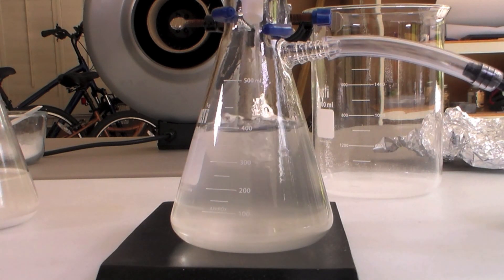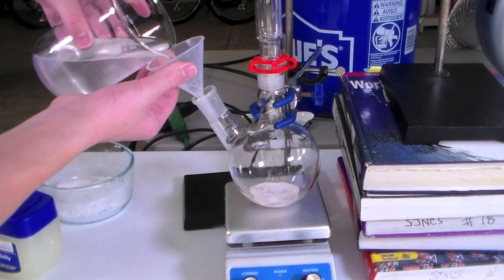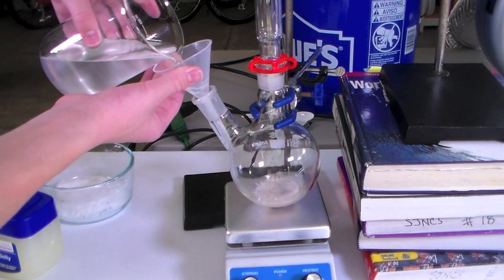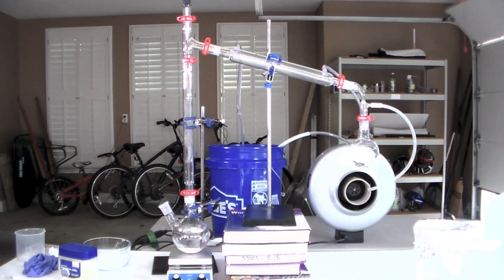How you proceed from here will depend on how pure you want your ethanol to be. It will still contain a small amount of acetone, so if you want to remove this you can fractionally distill it and discard the acetone distillate that comes over at 56 degrees Celsius.